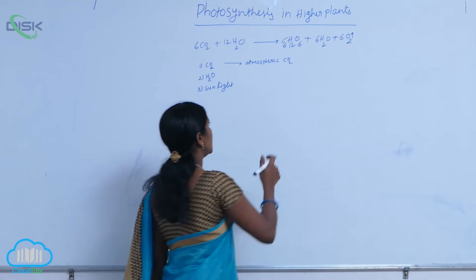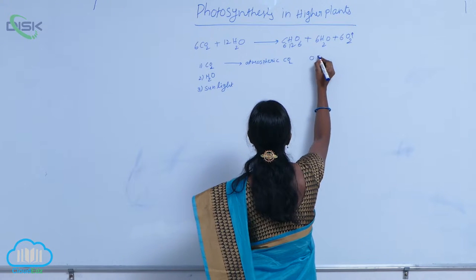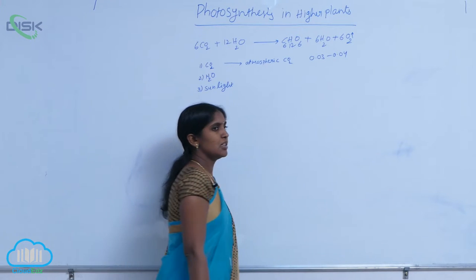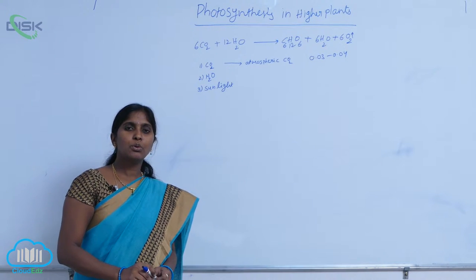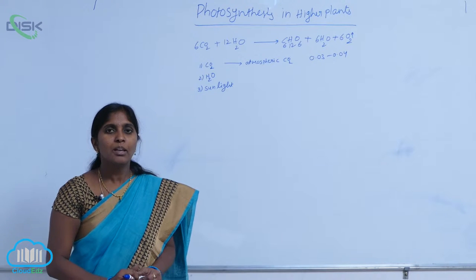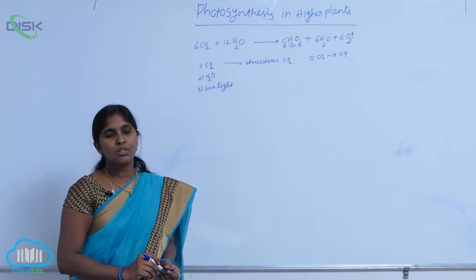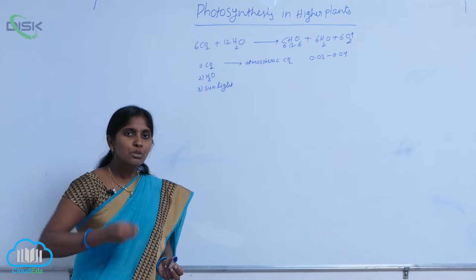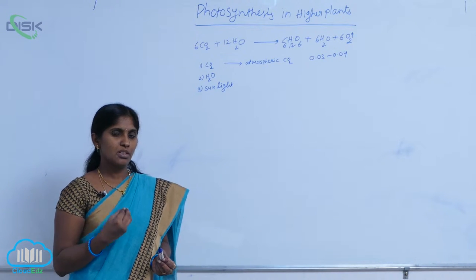In the atmosphere, it is available in 0.03 to 0.04 percentage. The available CO2 is absorbed by plants through the stomata by diffusion also. The absorbed CO2 is utilized for photosynthesis.